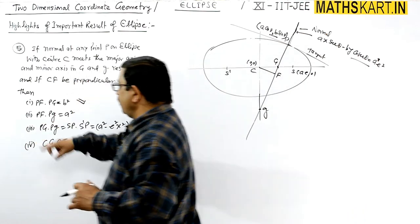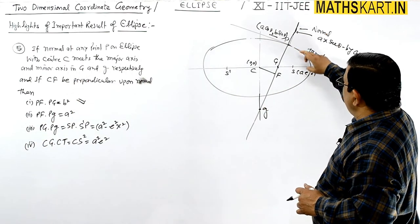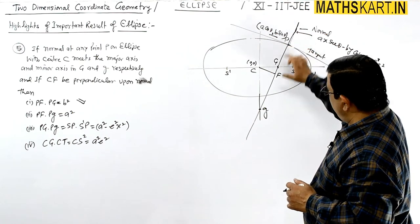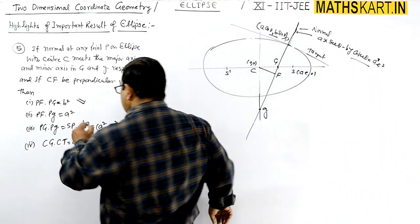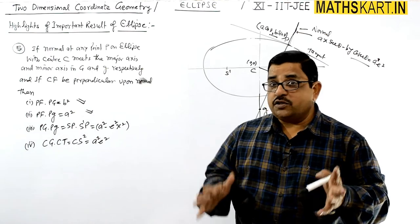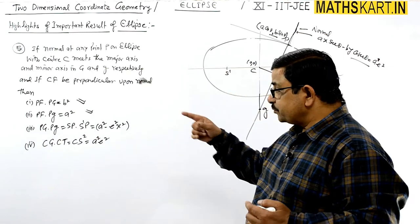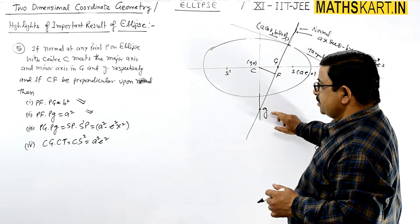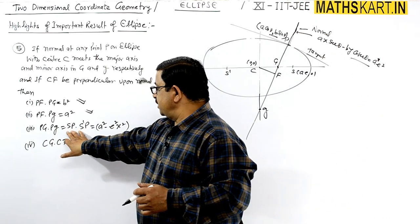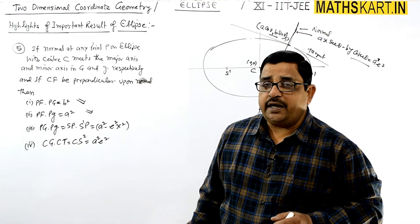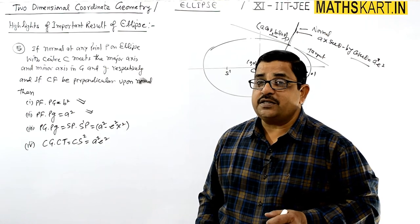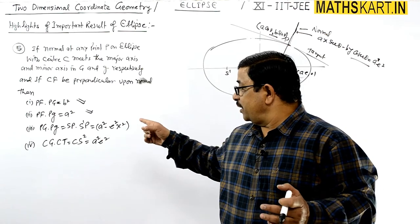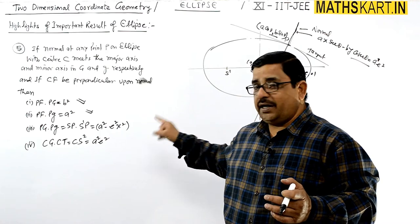The second sub-result: PG × small pg = SP × S'P. The two focal distances SP and S'P are (a + ex) and (a - ex) respectively. Their product is a² - e²x², which equals PG × small pg. This gives another constant relationship between the normal intercepts and the focal distances.